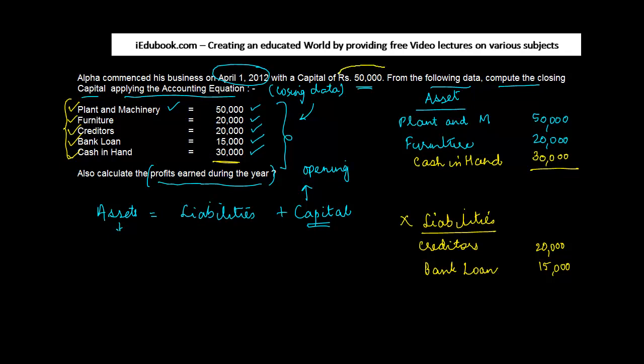But there is an opening balance of capital also. So what do I do with this? Let's just hold on to it because this accounting equation you have to do on a particular date. So let us do the total of assets and liability. Total of assets is 50 plus 20, 70 plus 30, 100,000.